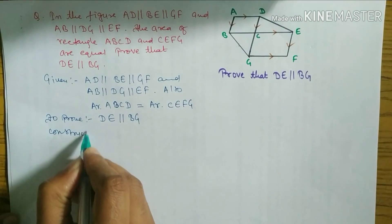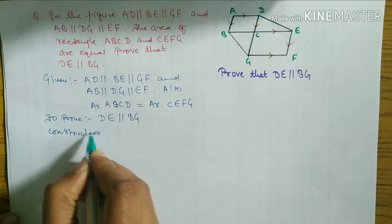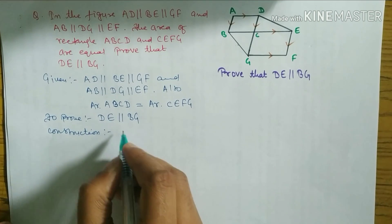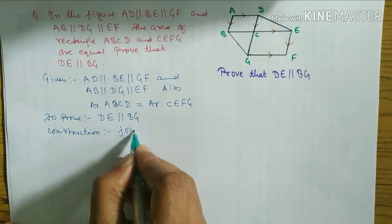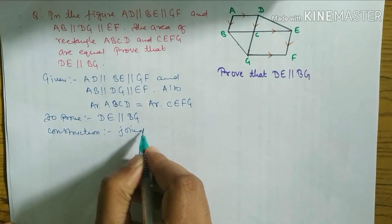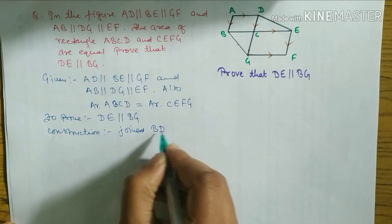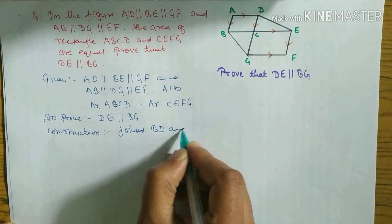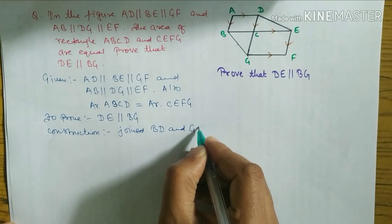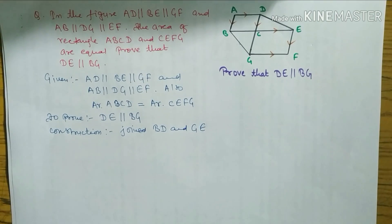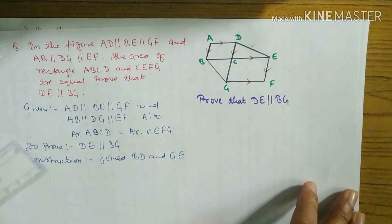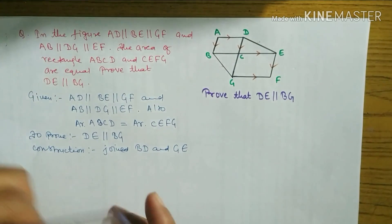Now we have to write the construction. In construction, we join BD and GE. Always use pencil and scale when doing construction.